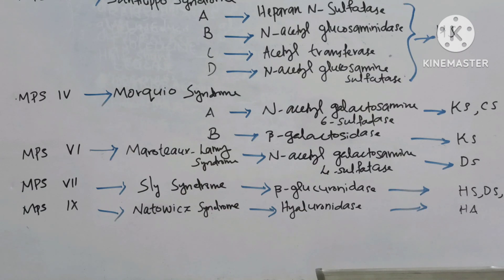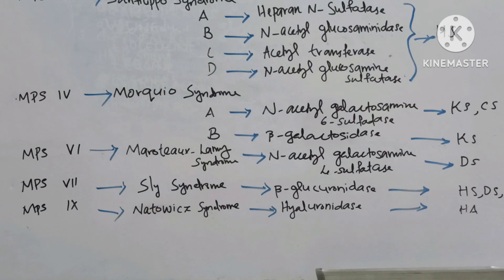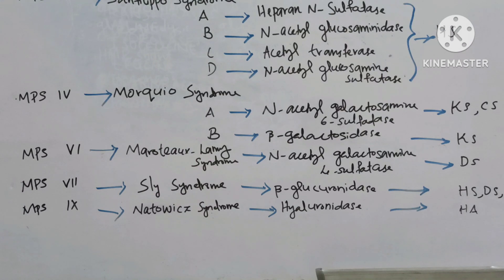MPS9, Natowicz syndrome. Due to the deficiency of the enzyme hyaluronidase, and the accumulated product is hyaluronic acid. Type 3 is most common, followed by type 2, then type 1. All are autosomal recessive except Hunter syndrome, which is X-linked recessive, usually affecting males.